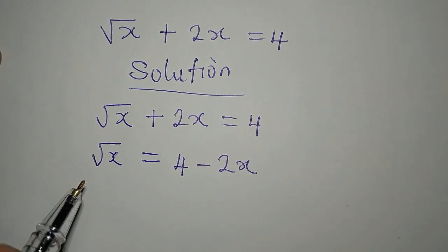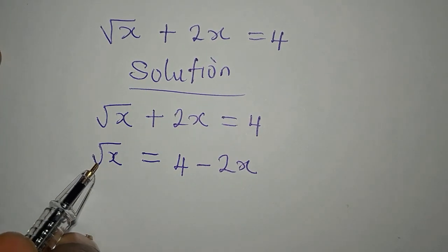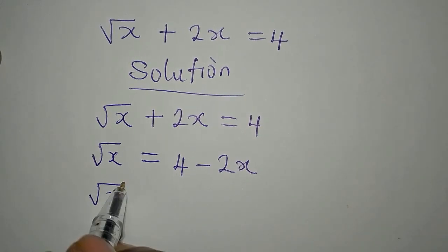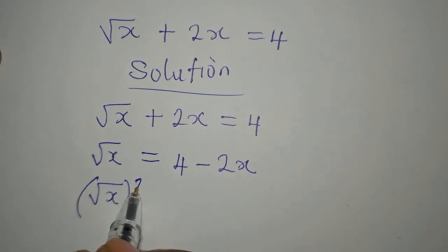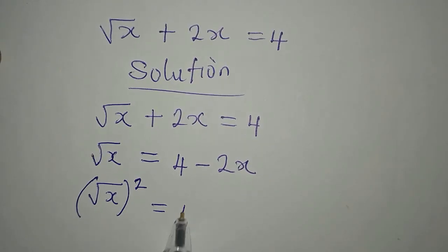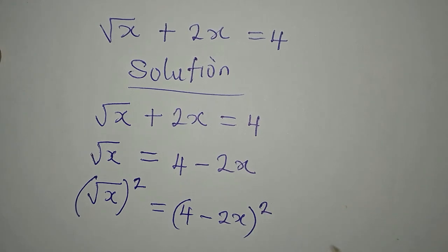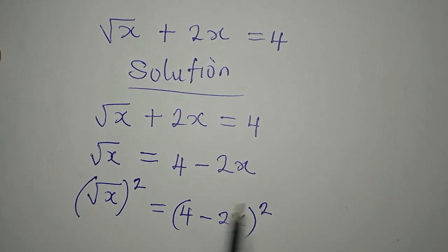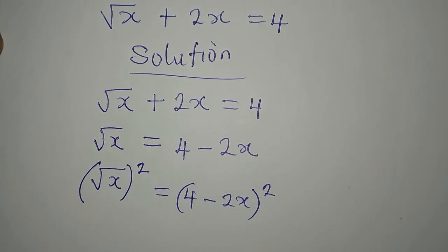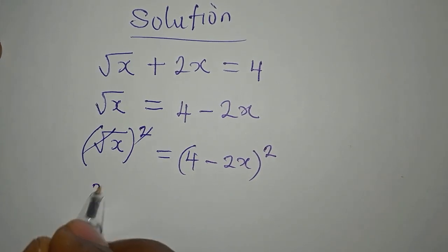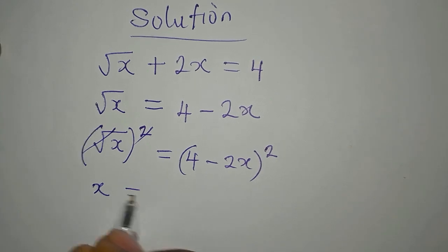Now our target is to remove the square root, so this is root x. To remove this square root you would have to square this, then we have 4 minus 2x, you'd also square this. Now if you decide to square each of them separately you will be wrong. This is going to go with this and then our x is equal to here we have 4 minus 2x in two places.